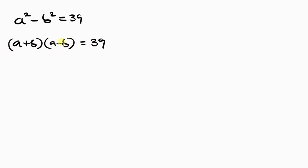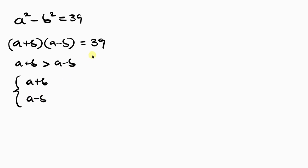Since we are dealing with natural numbers, we are only interested in the positive factors of 39. Notice that a plus b is greater than a minus b. The positive factor pairs of 39 are: 39 times 1, and 13 times 3. So a plus b carries the larger factor, and a minus b carries the lower factor. These give us two cases to work with.